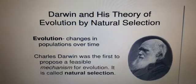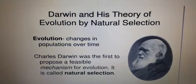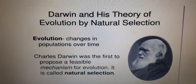Charles Robert Darwin was an English biologist who proposed the theory of evolution. He showed that all the species of living organisms have been gradually evolved over the period of thousands of years from a common ancestor. He proposed that the principle of natural selection is responsible for this evolution.